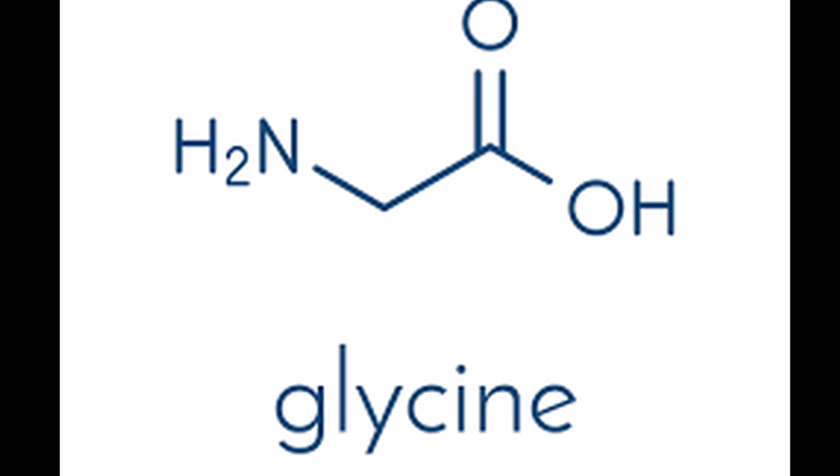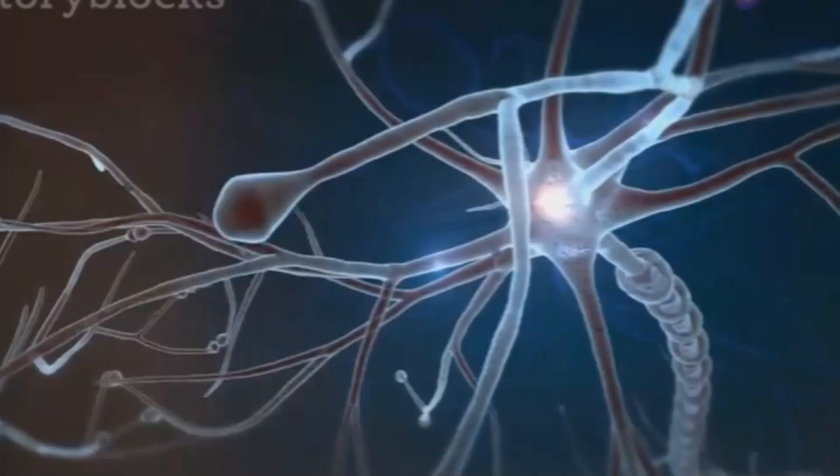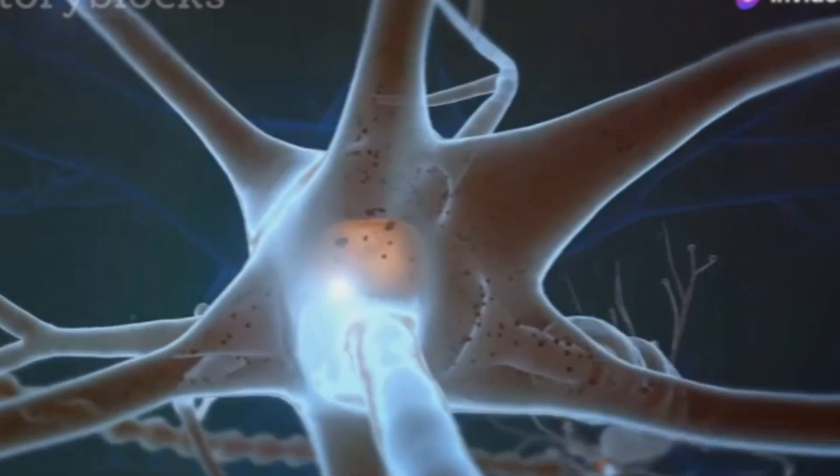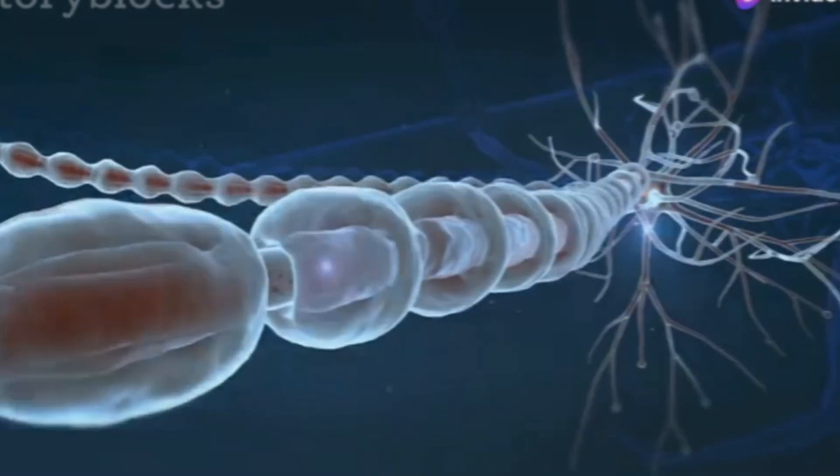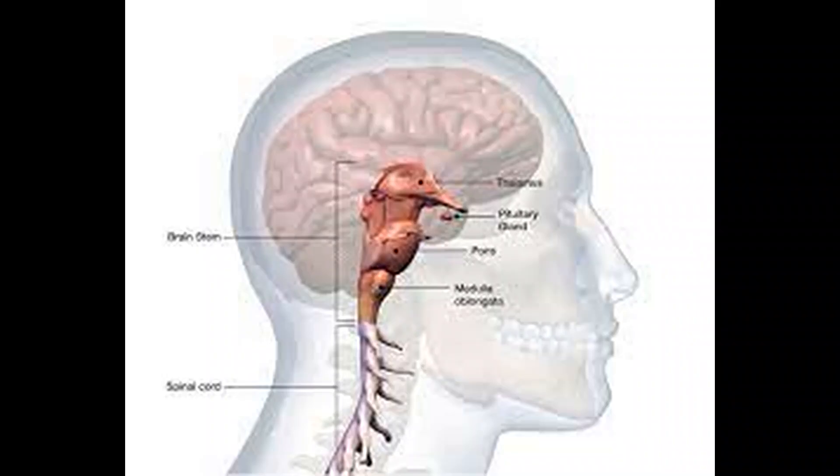Glycine is a simple amino acid that acts as an inhibitory neurotransmitter in the central nervous system. It is primarily found in the spinal cord and brain stem, where it plays a crucial role in motor control and sensory processing.